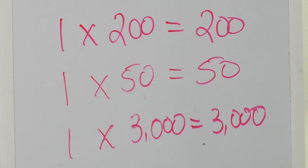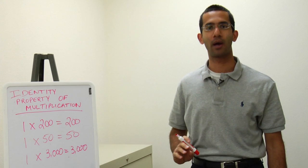This is the definition and a few examples of the identity property of multiplication.